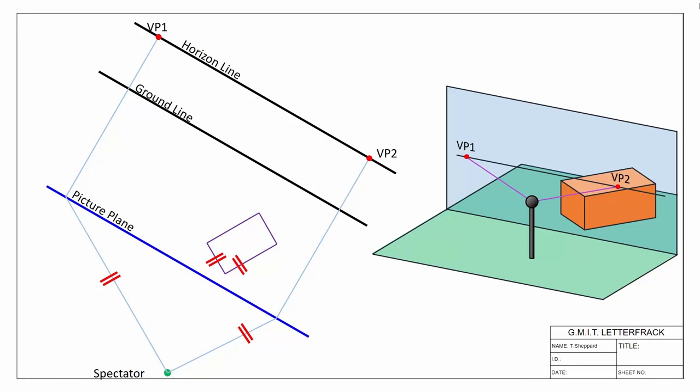Hello and welcome back to our webcast series on the topic of perspective. In this video we're going to look at what to do if we have an object where no original edge of the object is resting on the picture plane. In all the previous examples we've seen, we've always had at least one face or one edge on the picture plane. In this question we're going to look at what happens if we have an object where there is no corner or no face on the picture plane to start with.